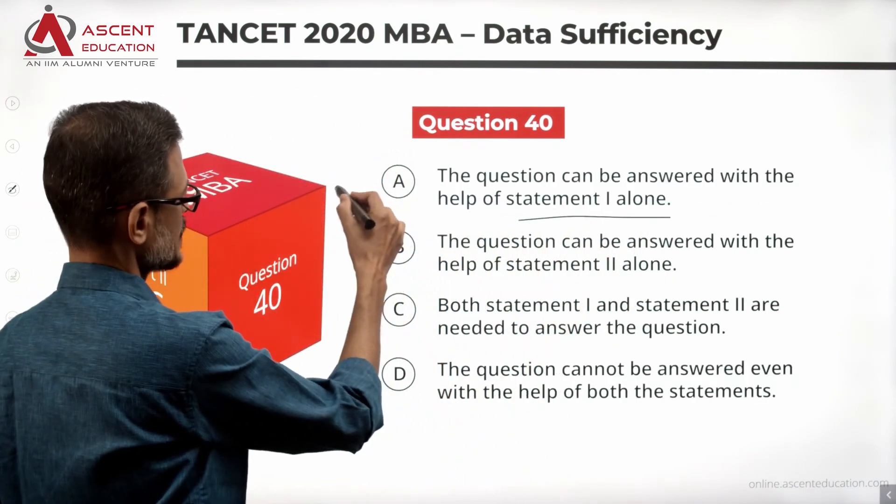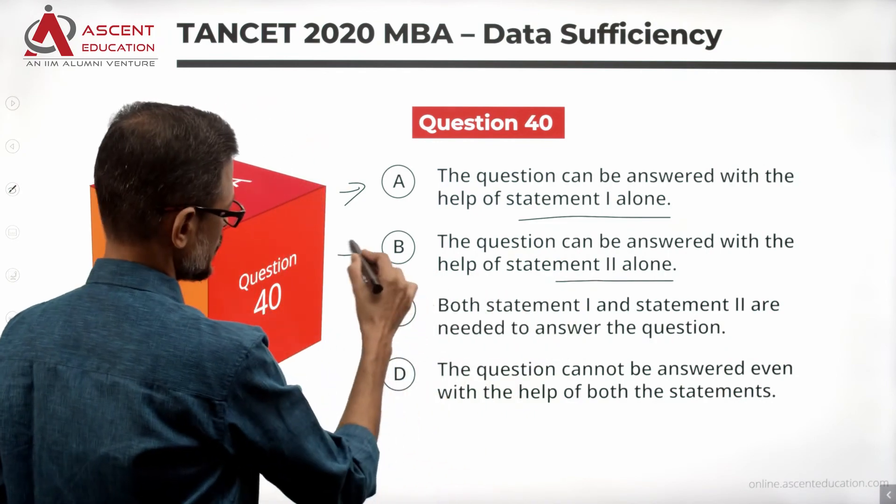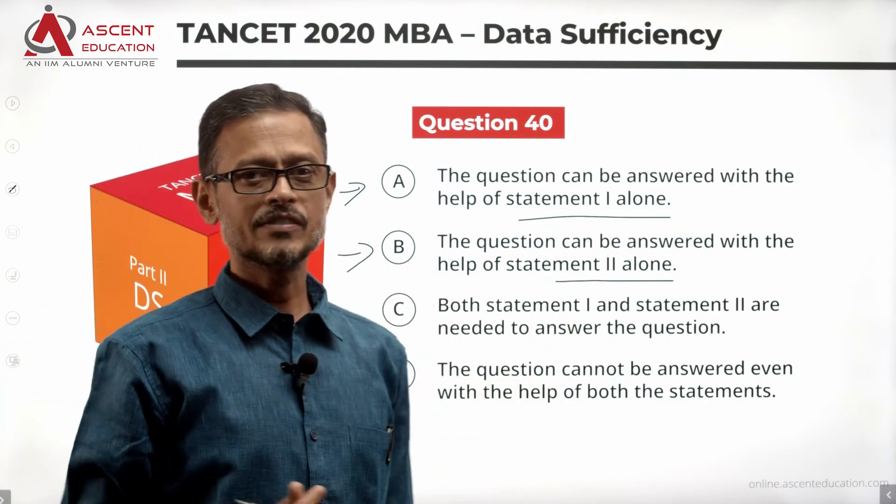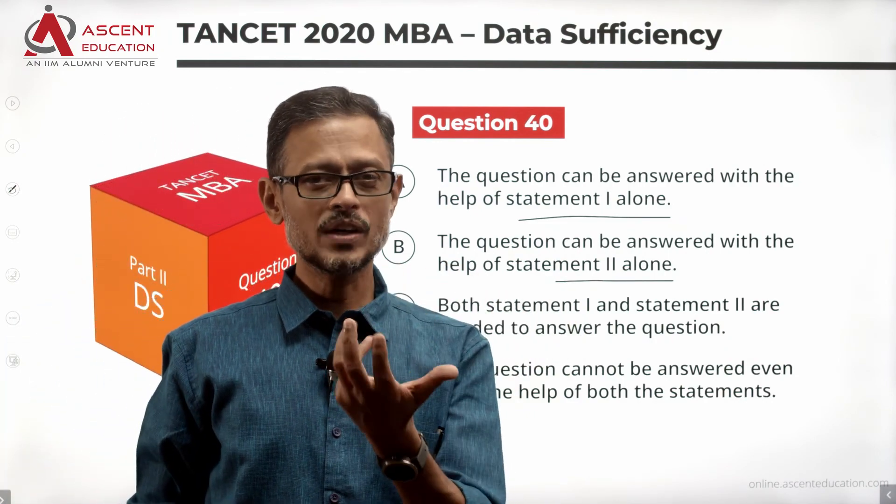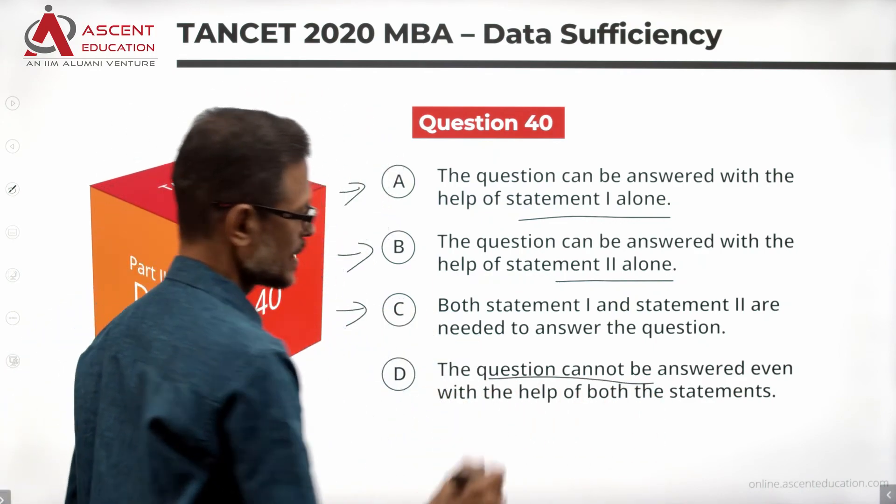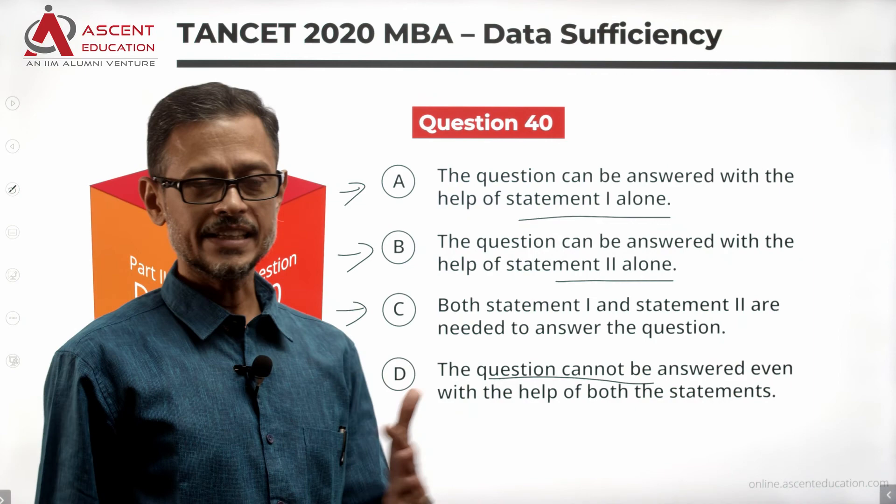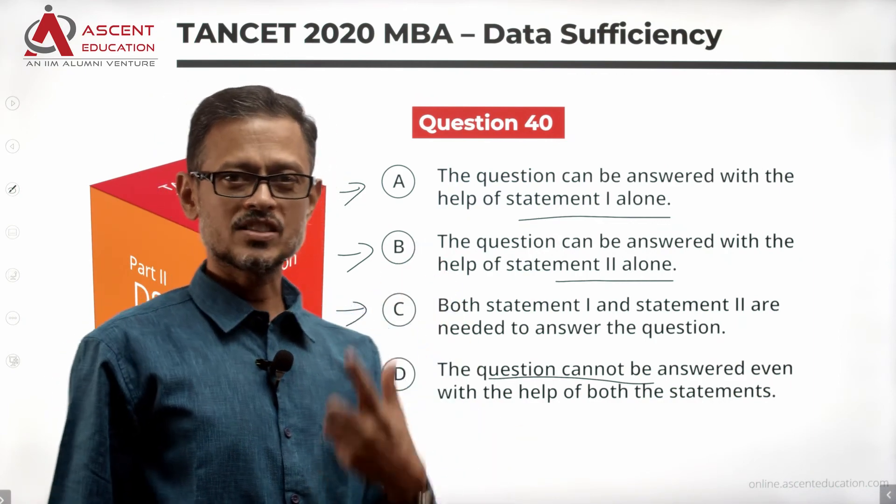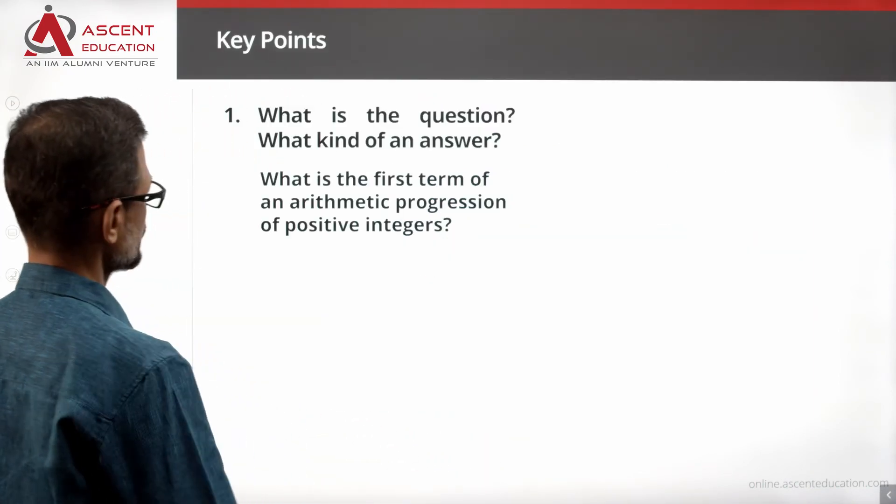Statement 1 alone, answer option is A. Statement 2 alone, answer option is B. Both statements combined, we will be able to get a unique value for the first term of the AP, then the answer option is C. And if both statements combined answer doesn't come, then the answer option is D. With this equipped with this information, let's look at what the question is once more.